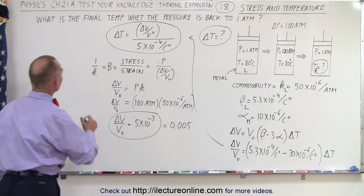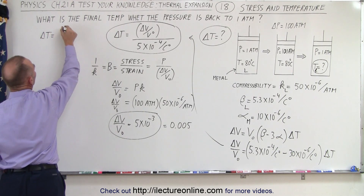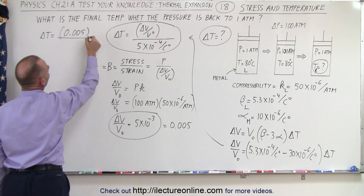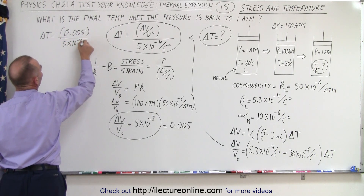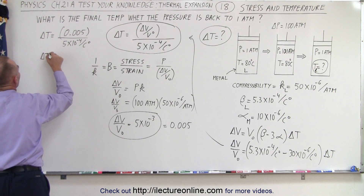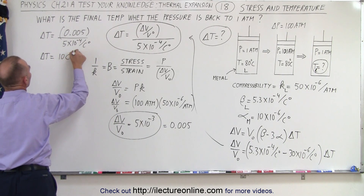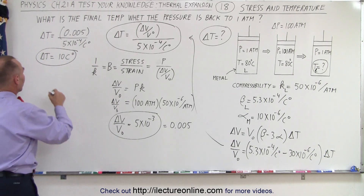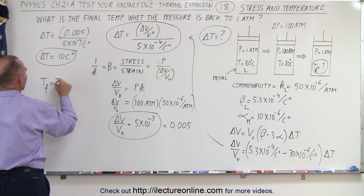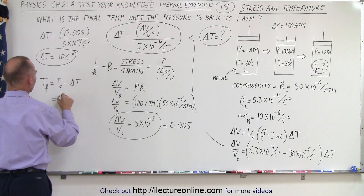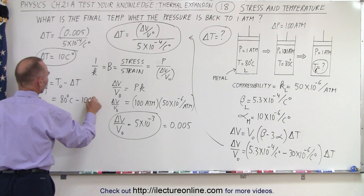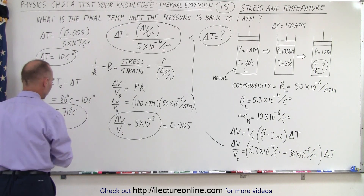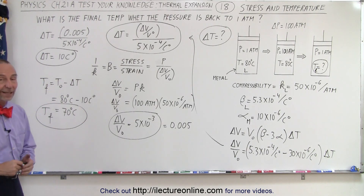Now we can find the change in temperature. Delta T equals delta V over V naught, which is 0.005, divided by 5 times 10 to the minus 4 per centigrade degree. So delta T equals 10 centigrade degrees. For the pressure to drop, the temperature had to go down. Therefore T final equals T initial minus delta T, which is 80 degrees centigrade minus 10 centigrade degrees, giving a final temperature of 70 degrees centigrade — and the pressure will be back to 1 atmosphere.